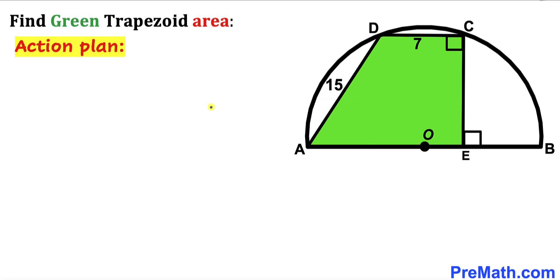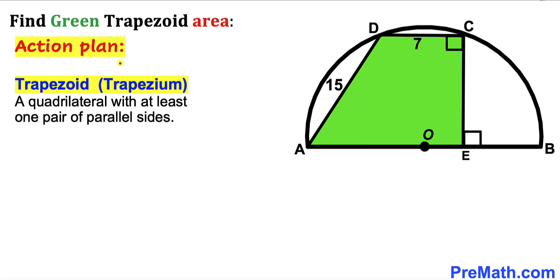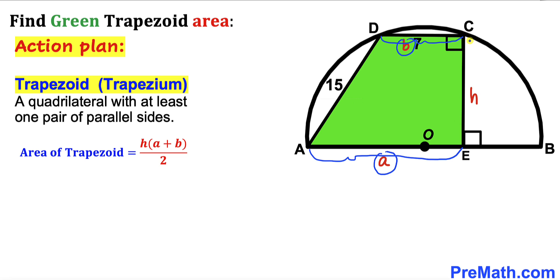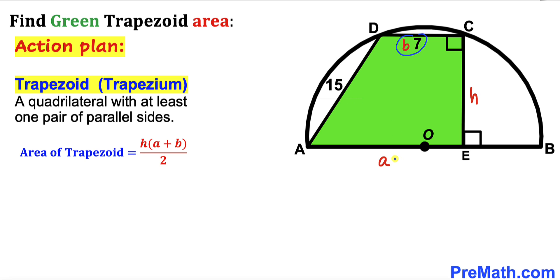Here's our action plan. Since we are dealing with this trapezoid, let's recall the definition: a quadrilateral with at least one pair of parallel sides. Side CD is parallel to diameter AB since both angles are 90 degrees. The area formula is H times (A plus B) all over 2. Base AE is lowercase a, CD is base B, and CE is the height. We know B equals 7, so we need to find A and height H.